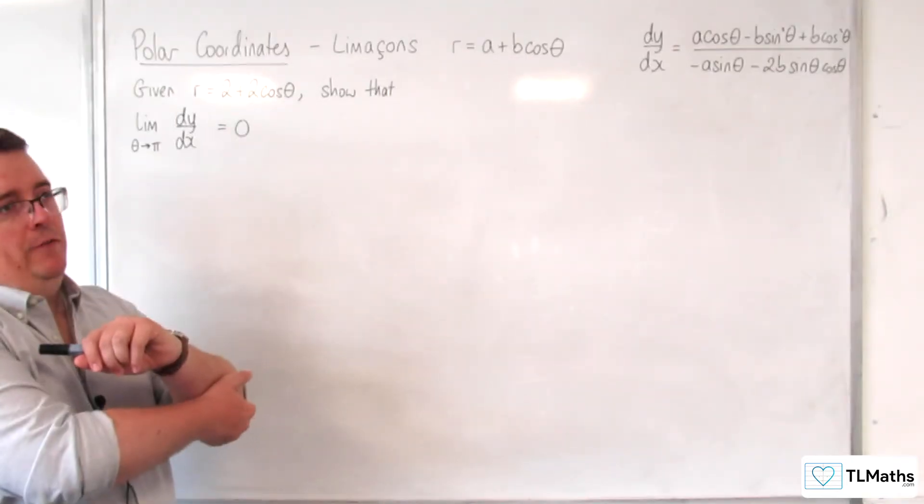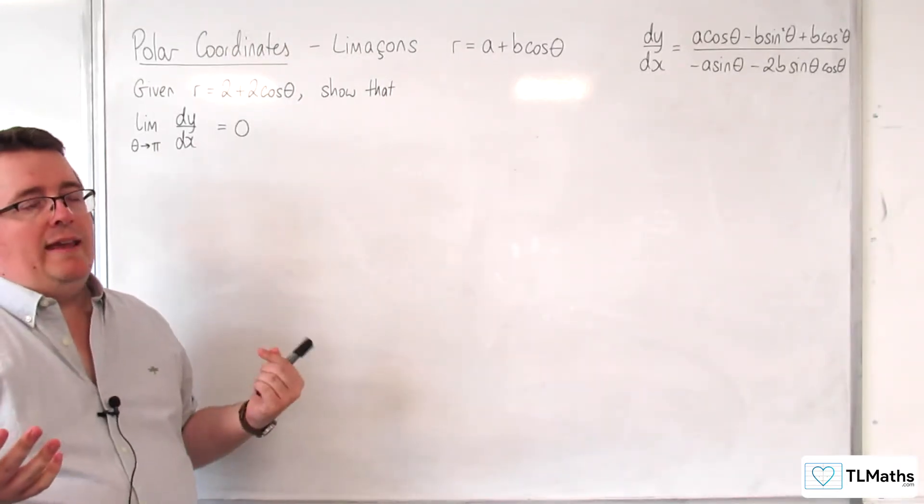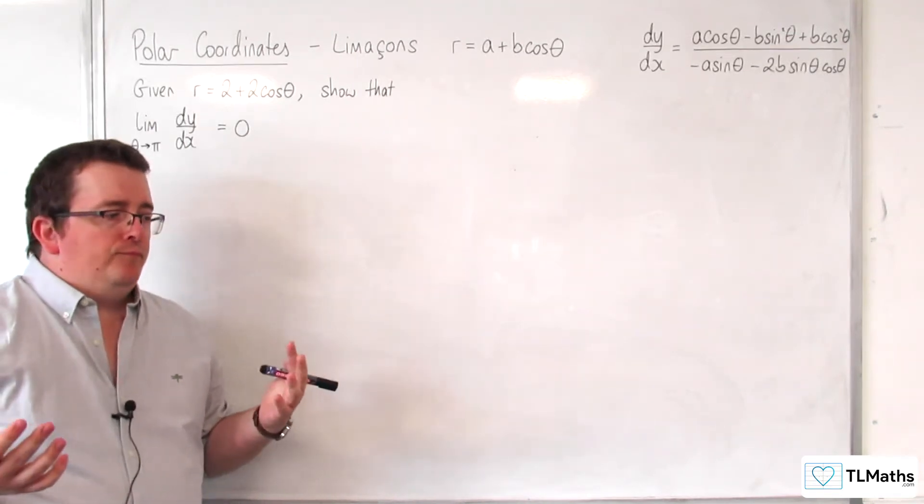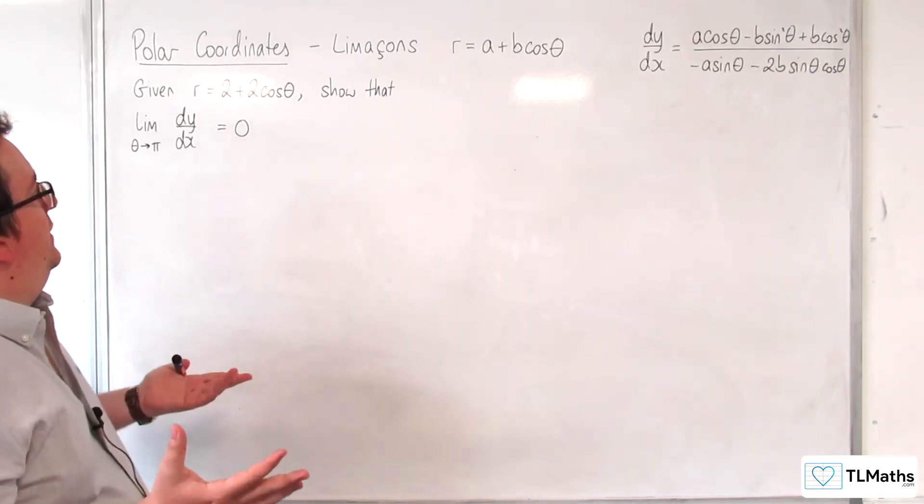We're going to get 0 over 0, so the gradient of the curve doesn't really exist there, and so a tangent line doesn't exist there.